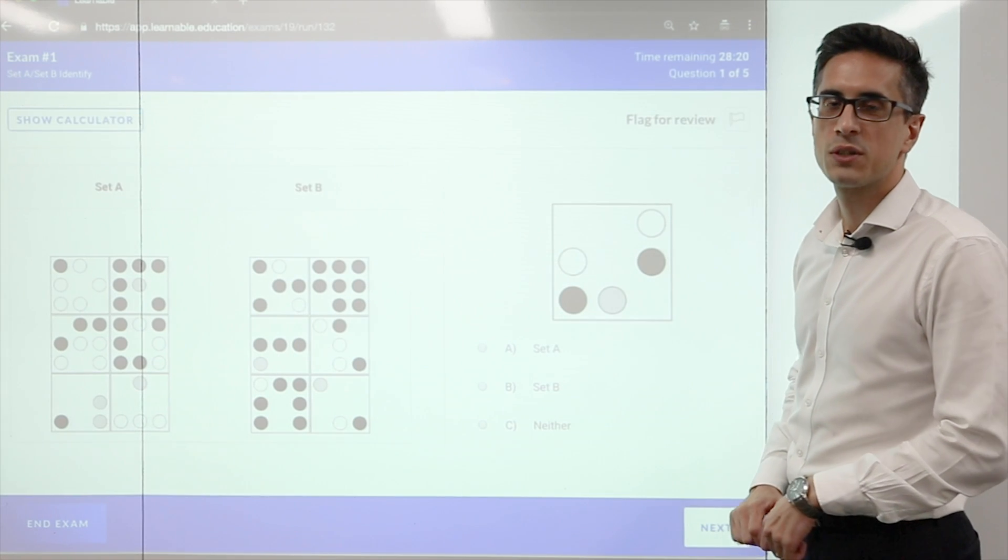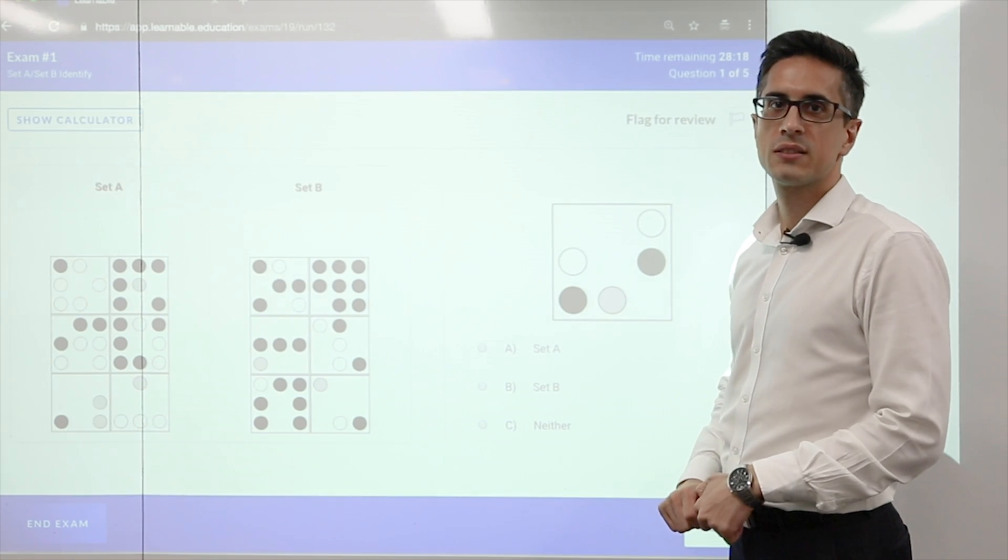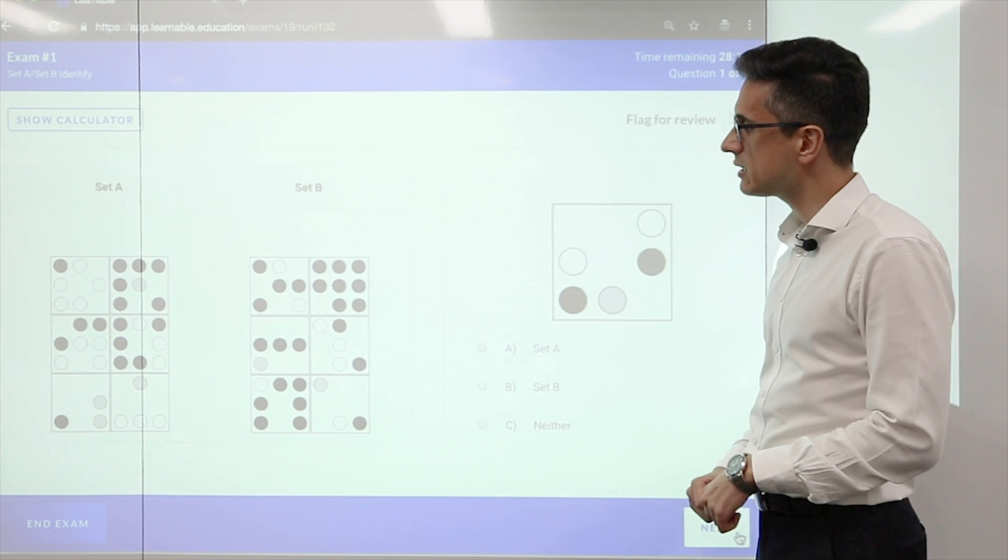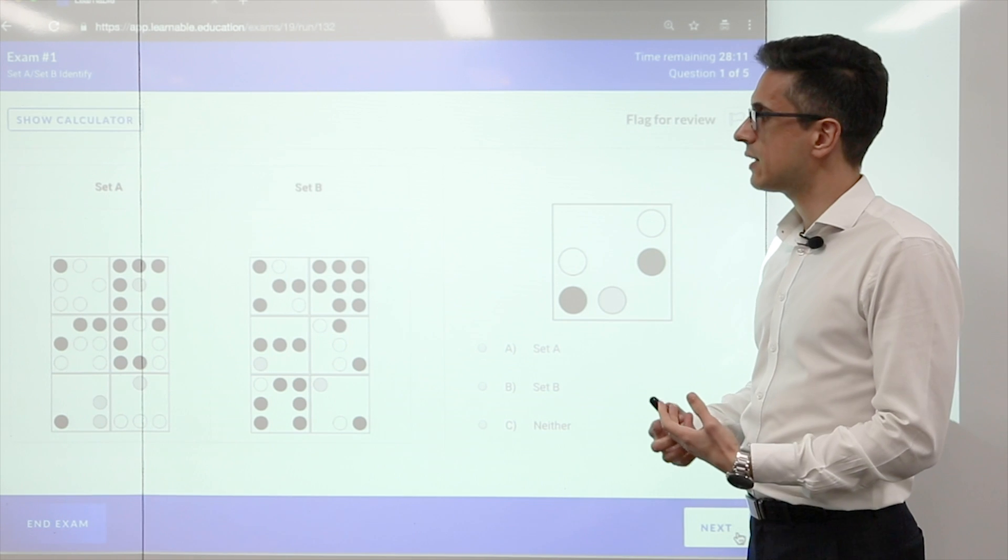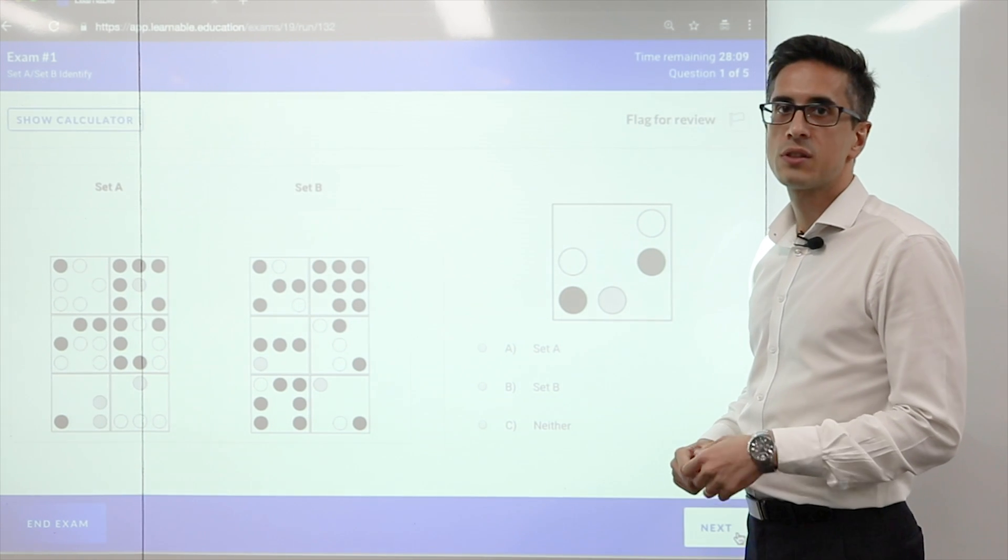This is an example of a set A, set B question from the abstract reasoning subtest. This particular question is an equivalence type question where certain shapes are equivalent to other shapes and the total for each square adds up to a certain amount.